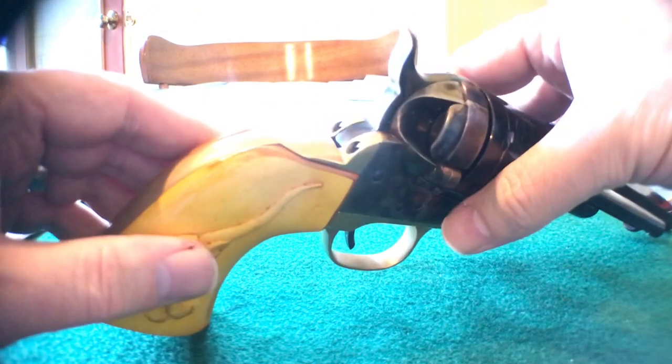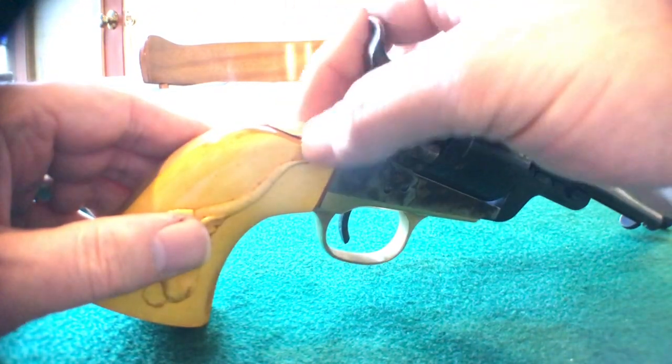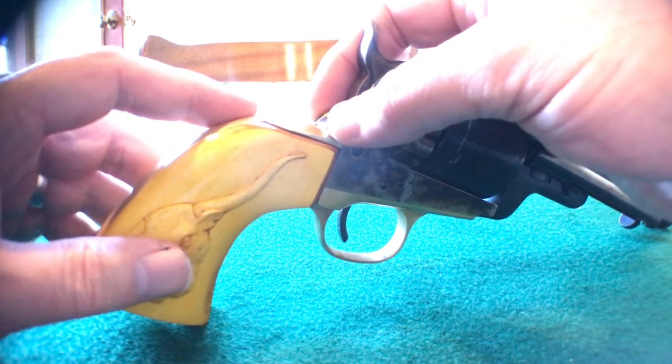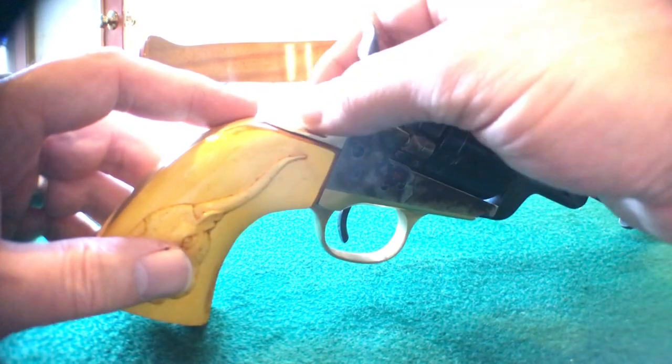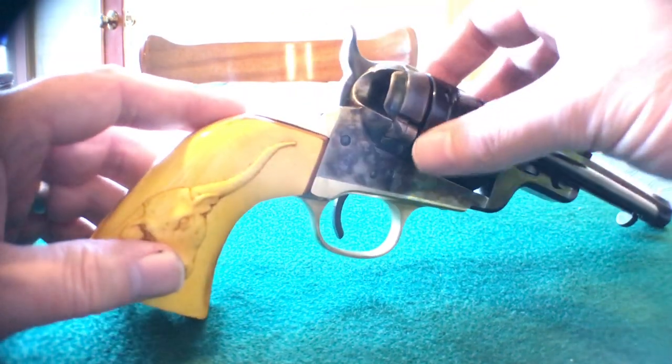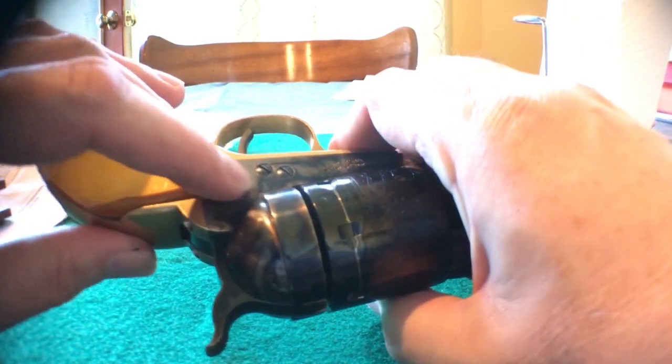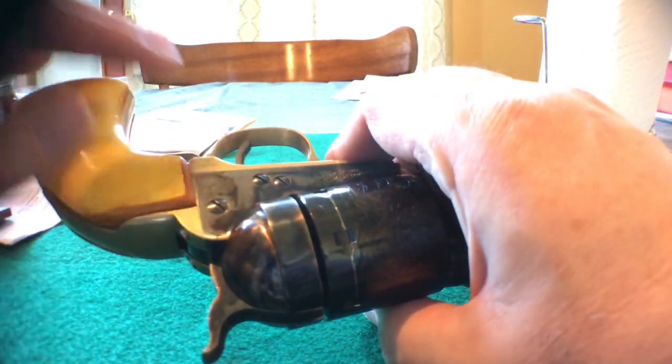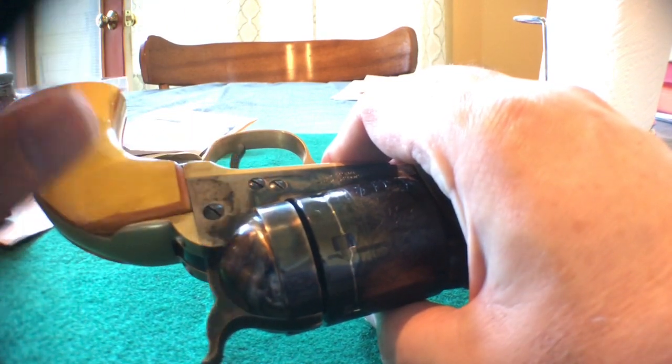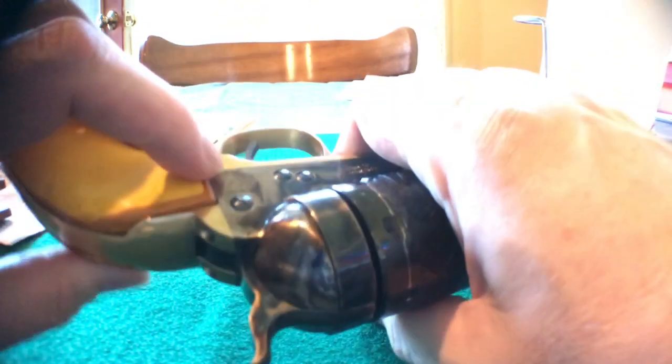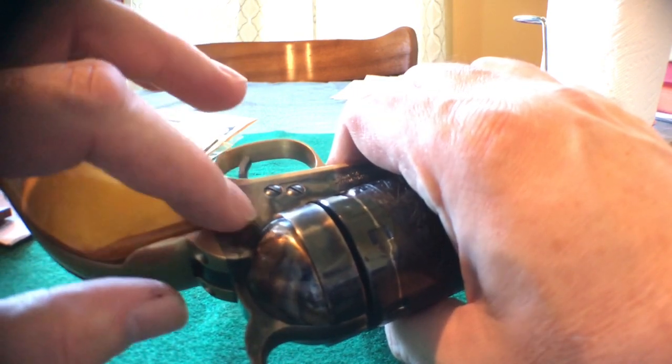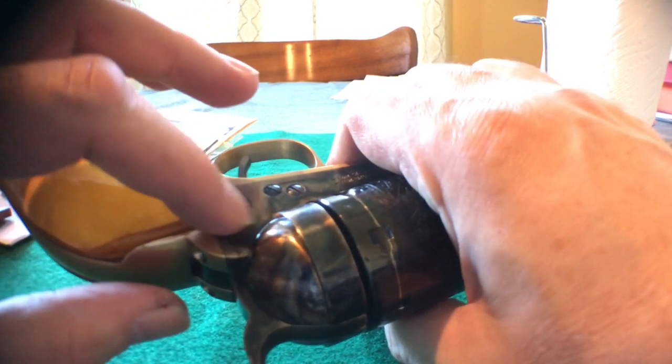Screws on this gun, this Uberti Navy, the metal is kind of soft. Make sure you have a good fitting screwdriver. Outfits like Midway will sell Peacemaker screwdriver sets, and there's one or two of those out of the three screwdriver set that work real well with these. If you don't have a good screwdriver set and you're going to mess with these at all, you're going to want to get one. I think the set I've got came from Midway, specifically for Peacemakers, single action armies, but one or two out of the three screwdriver set works real well with these, and it'll keep you from chewing these up because they are soft.